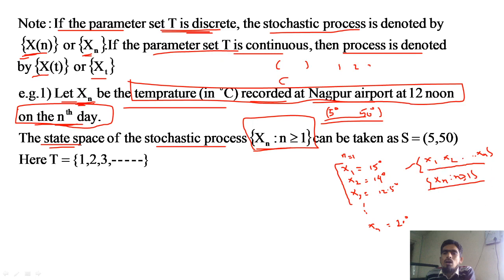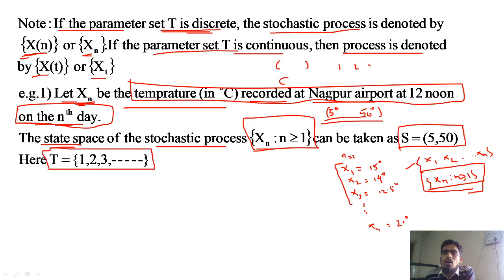This entire set is called the stochastic process or random process. The state space (possible temperatures) is S = [5, 50]. The parameter set (time set) is T = {1, 2, 3, ...}, representing the 1st day, 2nd day, 3rd day, and so on. This completes the first example.